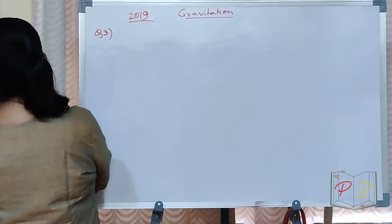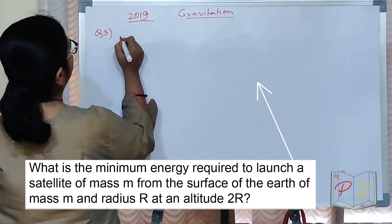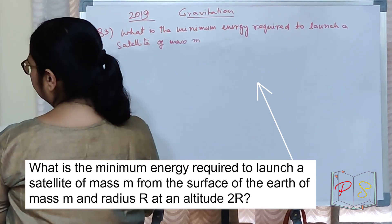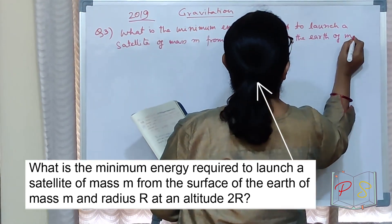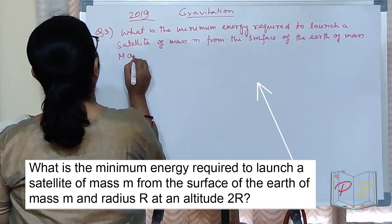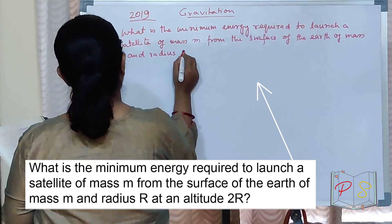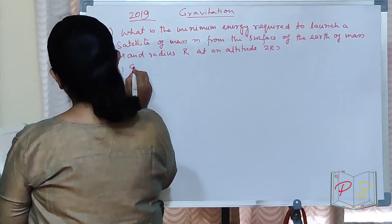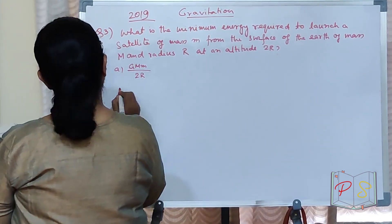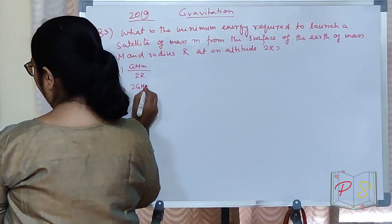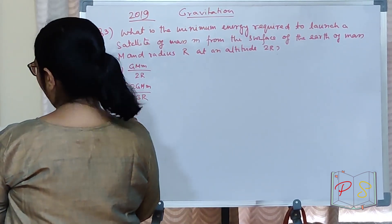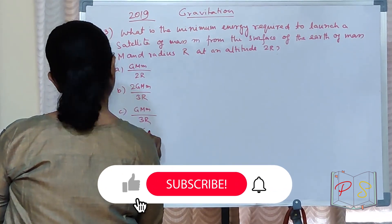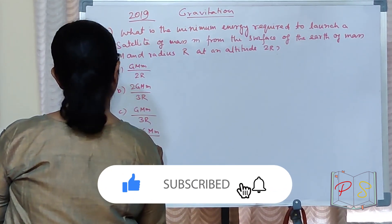What is the minimum energy required to launch a satellite of mass m from the surface of the earth of mass capital M and radius capital R at an altitude 2R? Option A: GMm divided by 2R. B option is 2GMm by 3R. C option is GMm by 3R. And D option is 5GMm by 6R.